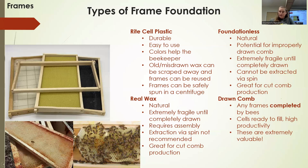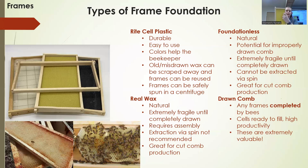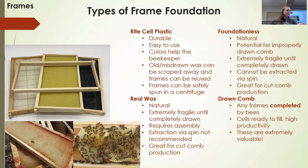Drawn comb is any frame with a complete cell structure — deep cells that can actually be used. Undrawn foundation is flat with no depth. A drawn frame has deep cells, giving room for the queen to lay eggs and for bees to store food. It's essentially a functional frame.